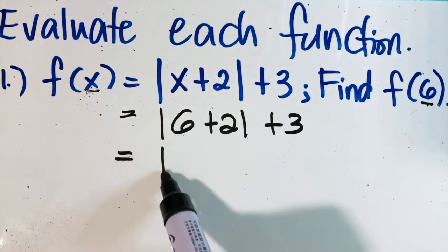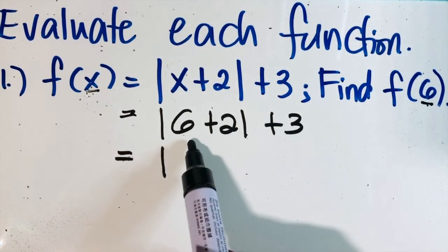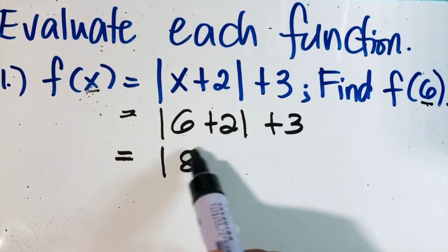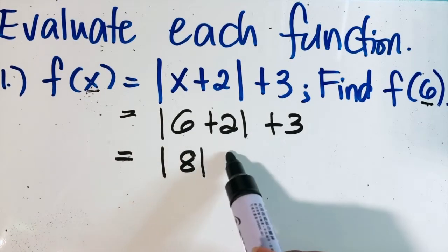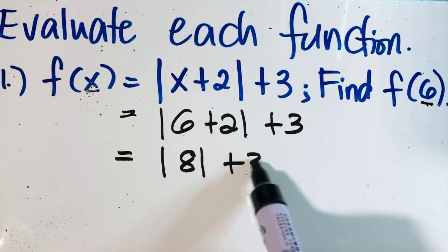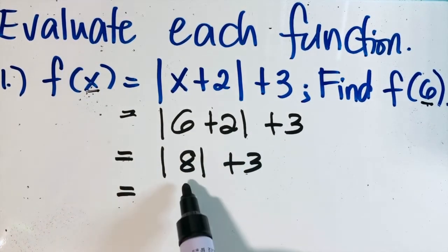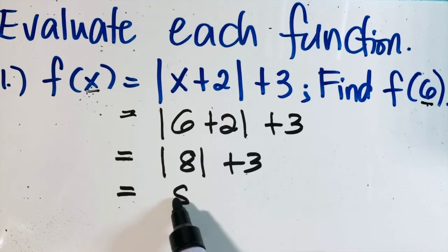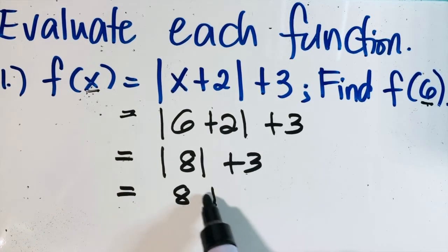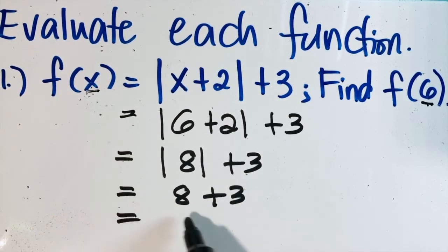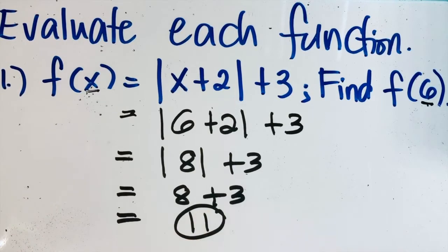Simplify. What is 6 plus 2? That is 8, so we have the absolute value of 8, plus 3. The absolute value of 8 is 8, and 8 plus 3 is equal to 11.